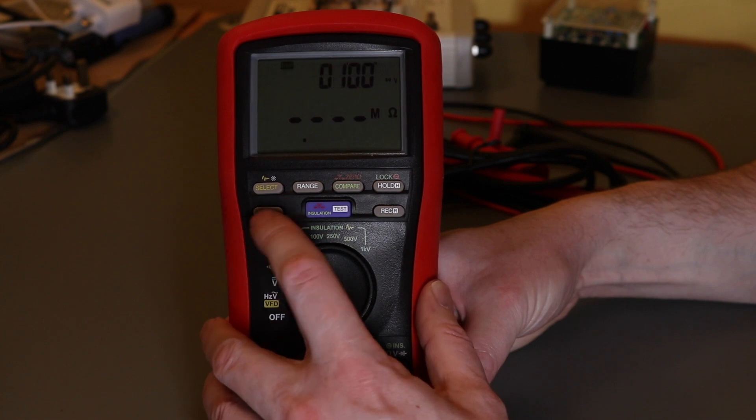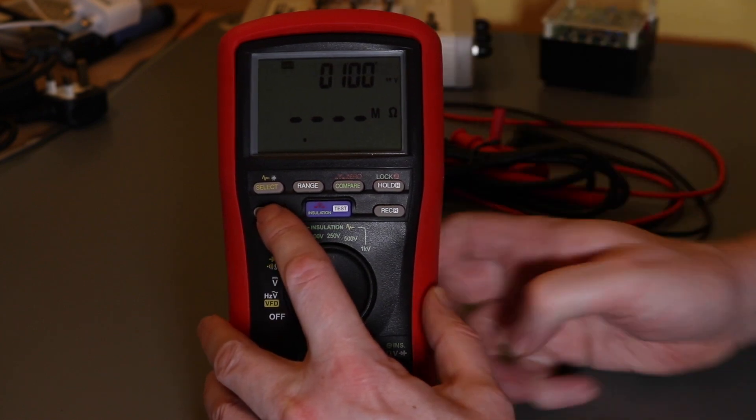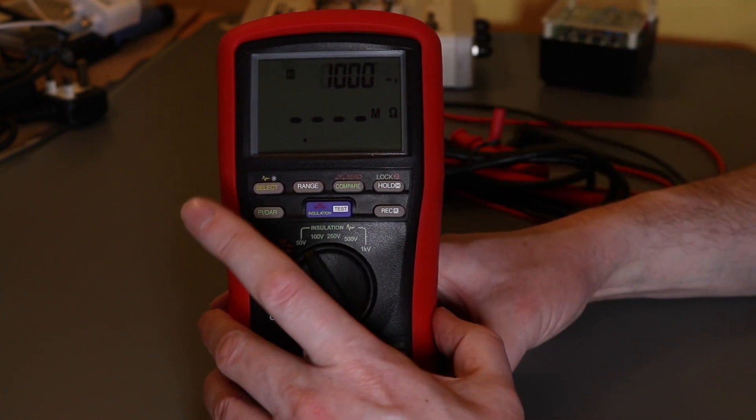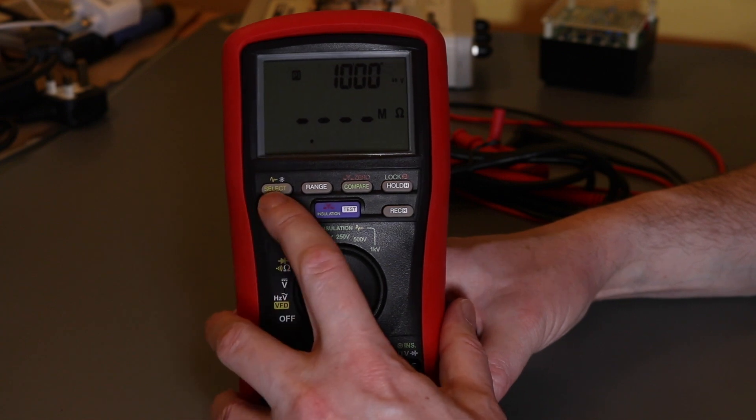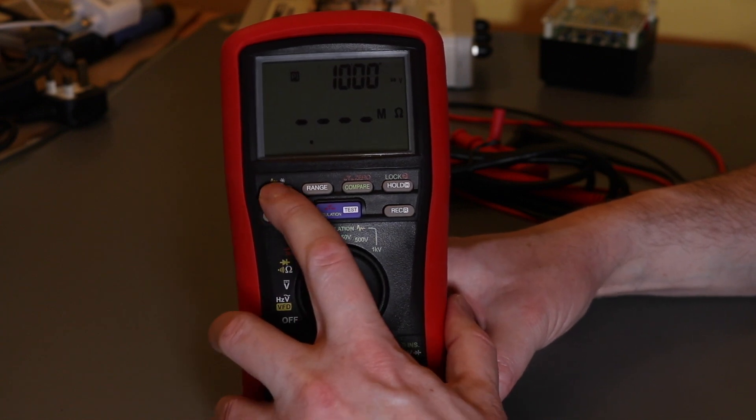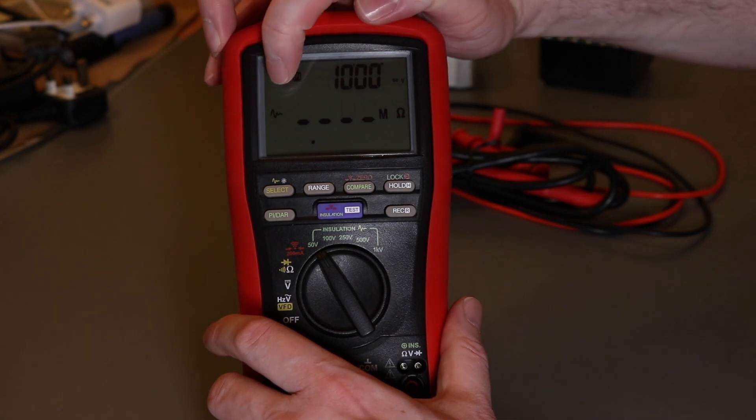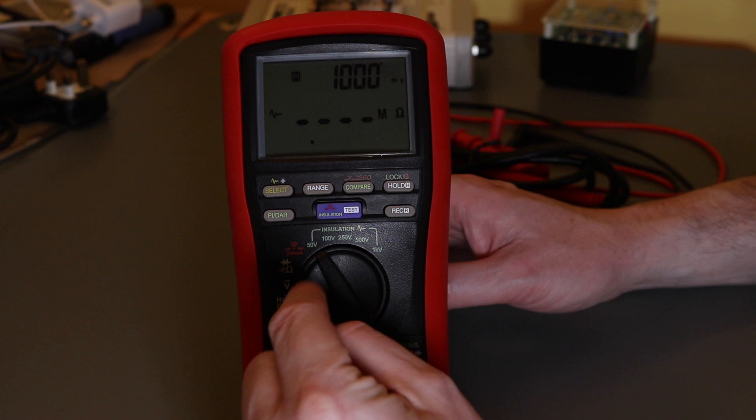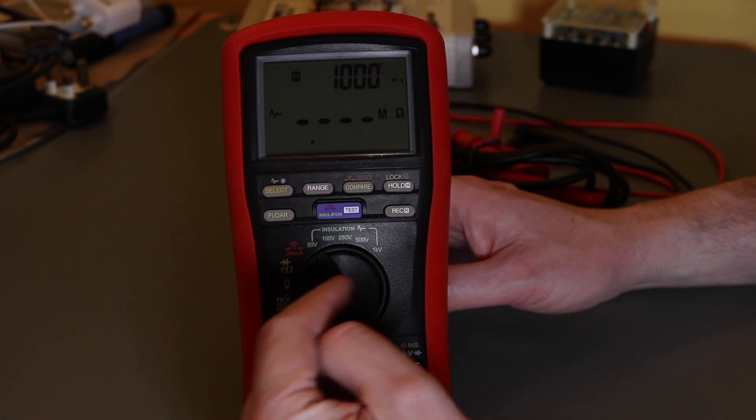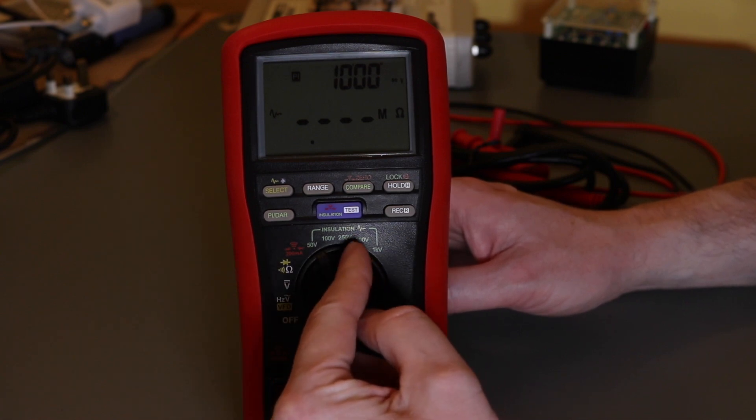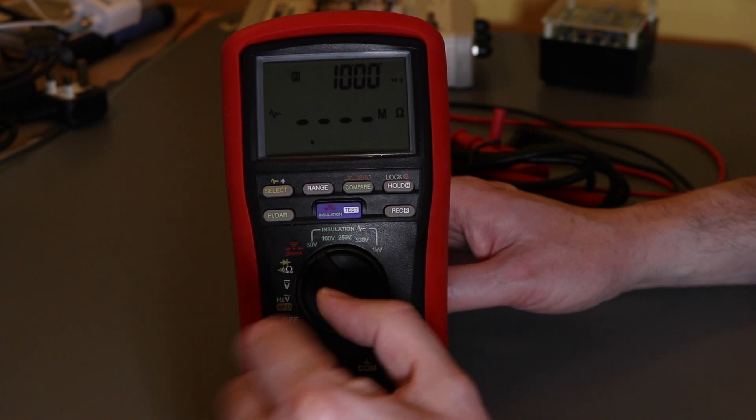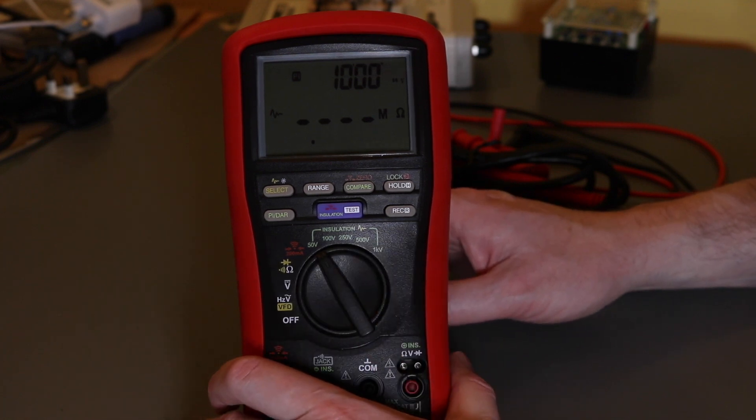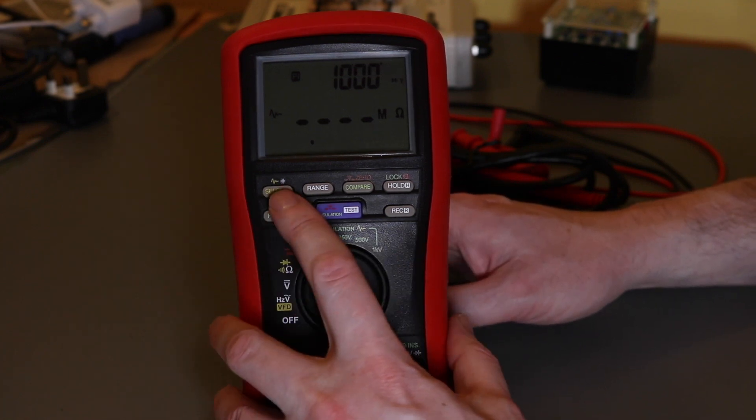Alongside for use in the insulation you have PI and DAR ratio tests, PI first and then DAR. Timer comes up at the top when you move to those functions. You also have a smoothing function. Smoothing is probably not much use on the 50, 100, 250 to 500 ranges because they only go up to 500 megaohms max, but the 1kV range can go up to 25 gigaohms, so it might be useful on that function.